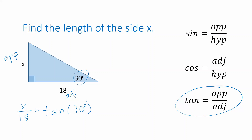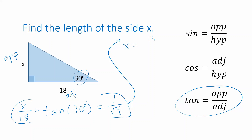That equals the tangent of the 30-degree angle. Since 30 is a common angle, the tangent of 30 degrees is 1 over the square root of 3. To isolate x, multiply both sides by 18, giving x = 18 / √3. Although you might want to simplify that — this can also be written as 6 times the square root of 3.